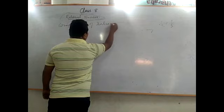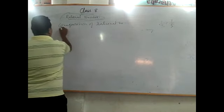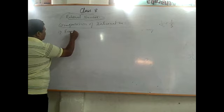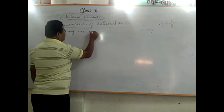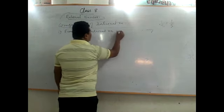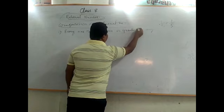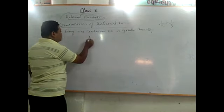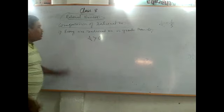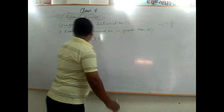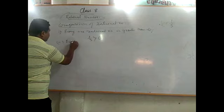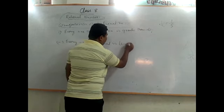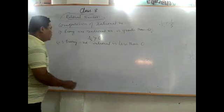In comparison of rational numbers, first: every positive rational number is greater than zero. For example, 2 by 3 is greater than 0. Second: every negative rational number is less than zero. For example, minus 2 by 3 is less than zero.